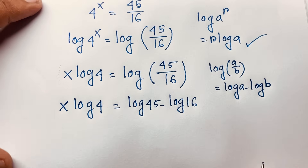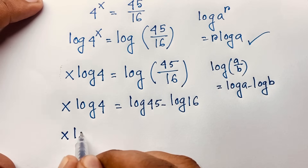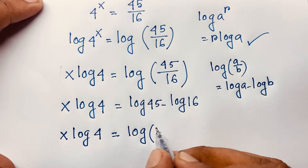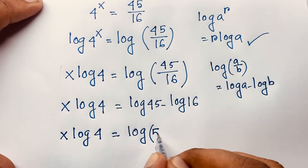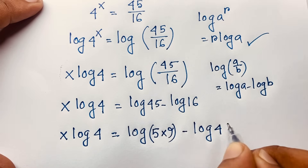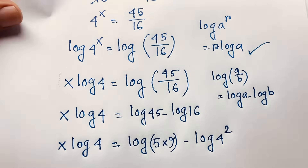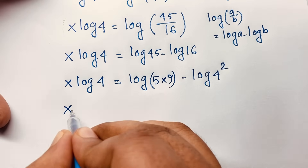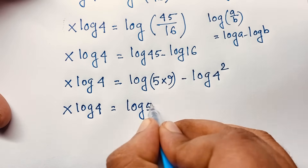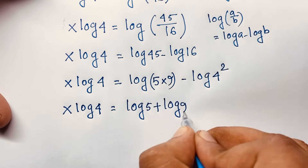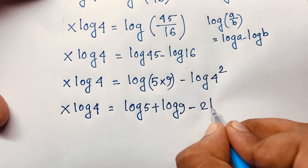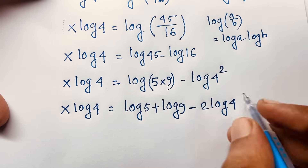So x log 4 equals log 45 minus log 16. Now 45 equals 5 times 9, so log 45 becomes log 5 plus log 9, using the product rule log(ab) = log a plus log b. And log 16 equals log 4 to the power 2, which gives 2 log 4.